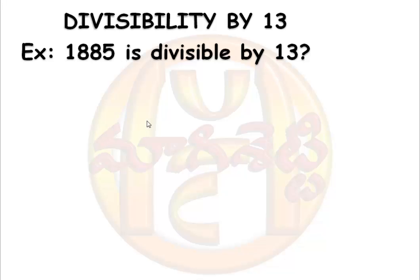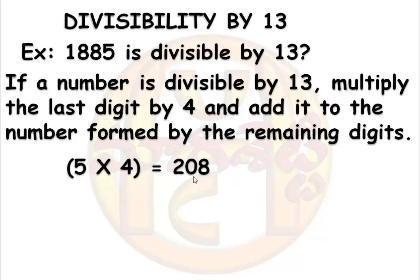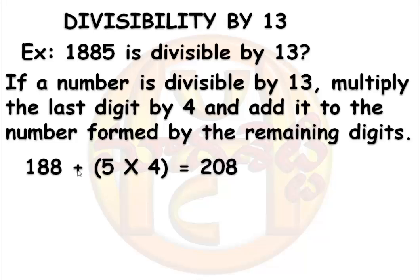The rule is: multiply the last digit by 4 and add that result to the number formed by the remaining digits. Here, the last digit is 5. Now multiply this by 4 and add to the number formed by the remaining digits.